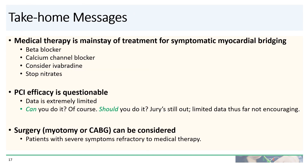Take-home messages: Medical therapy is the mainstay of treatment for symptomatic myocardial bridging. Beta blockers are considered first line, and calcium channel blockers are often used as well. Ivabradine can be considered. Nitrates should be stopped as they can exacerbate symptoms. The efficacy of PCI is questionable and data is extremely limited — can you do it? Of course, but the better question is: should you do it? The jury is still out, but the limited data available thus far is not particularly encouraging. For patients with truly medically refractory symptoms, surgery — either myotomy or CABG — can be considered.